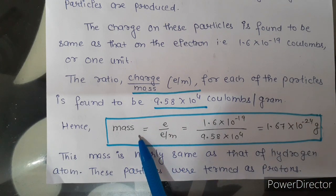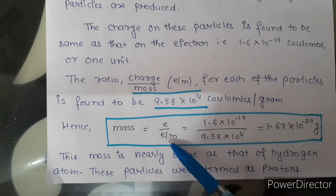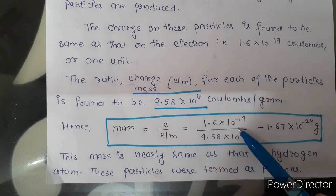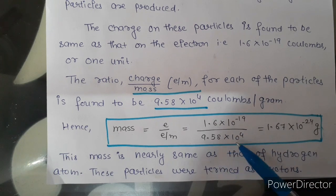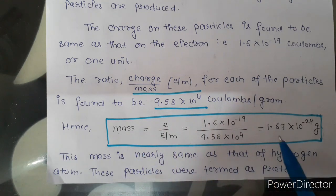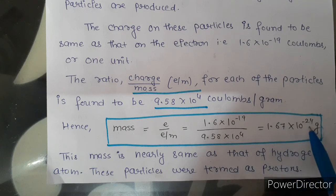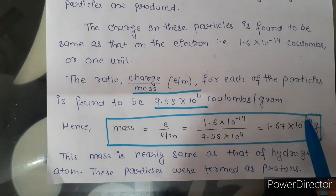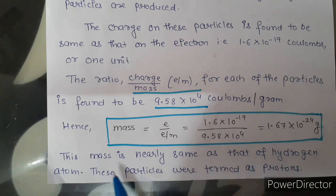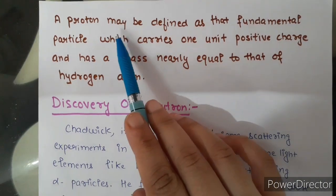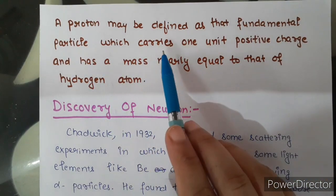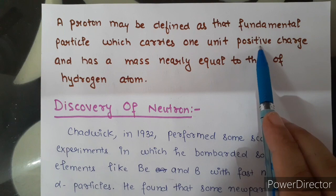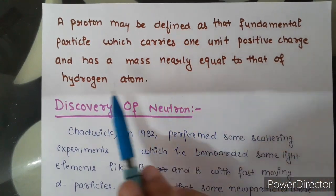The mass for each particle is equal to the charge divided by the charge-to-mass ratio: 1.6 × 10⁻¹⁹ / 9.58 × 10⁴ = 1.67 × 10⁻²⁴ gram, or in terms of kilograms, 1.67 × 10⁻²⁷ kg. This mass is nearly the same as that of the hydrogen atom. These particles were termed as protons. Proton may be defined as the fundamental particle which carries 1 unit positive charge and has a mass nearly equal to that of the hydrogen atom.